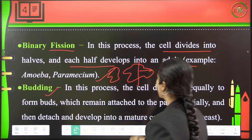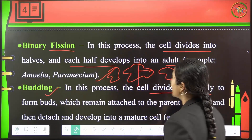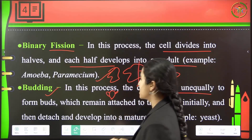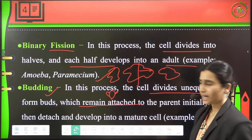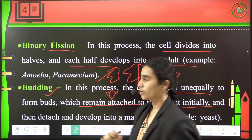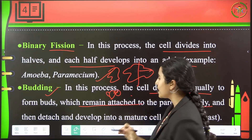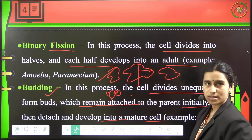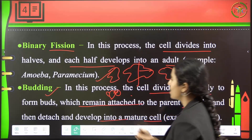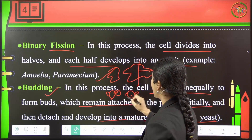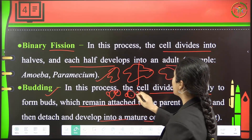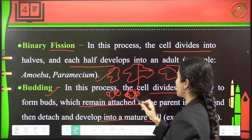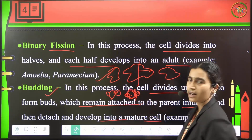Next is budding. Budding is a process wherein the cell will divide unequally to form buds. These buds will remain attached to the parent until they get matured. Once they are ready to become a new individual, they get detached from the parent and become a mature cell. Example is yeast. There will be buds which arise from the yeast mother cell. The parent cell will nurture these baby cells, and once they are matured enough, they get detached from their mother cell.